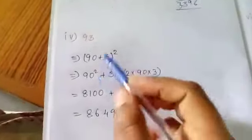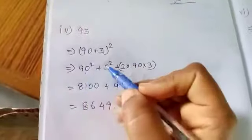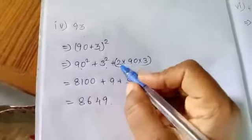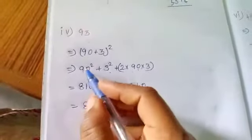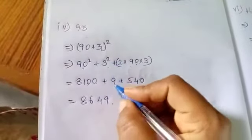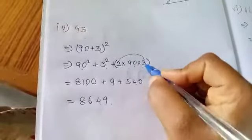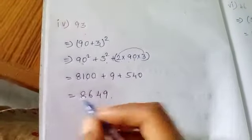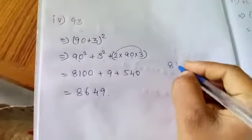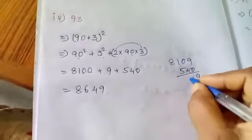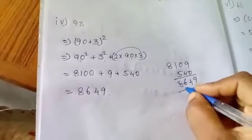Next sum is 93. We write 93 as (90 + 3)². Applying (a + b)² = a² + b² + 2ab: 90² = 8100, 3² = 9, and 2 × 90 × 3 = 540. Adding: 8100 + 9 + 540 = 8649. So the answer for 93 squared is 8649.